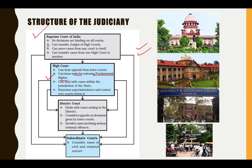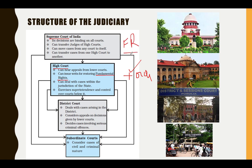Regarding writs: the Supreme Court issues writs under Article 32, while the High Court issues writs under Article 226. The types of writs include Habeas Corpus, Mandamus, Certiorari, Quo Warranto, and Prohibition. But there is a difference between the writs jurisdiction of the High Court and the Supreme Court — what is the difference?